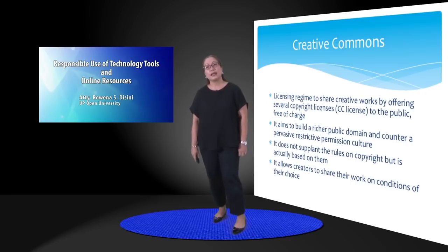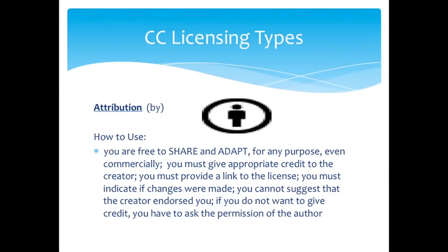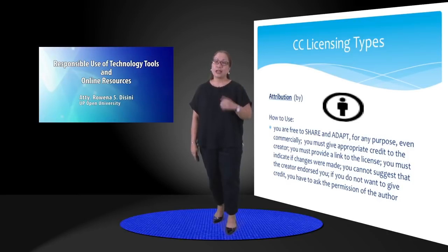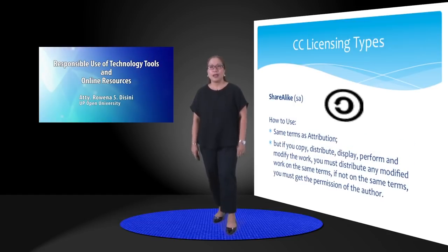There are several kinds of CC licenses. The first is the attribution license, identified by the word 'BY'. This is the most common and tells you that you are free to share and adapt that material for any purpose, even commercially, for so long as you give appropriate credit to the creator, provide a link to the license, indicate if changes were made, and cannot suggest that the creator endorsed you. If you do not follow these rules, you will always have to ask permission of the author.